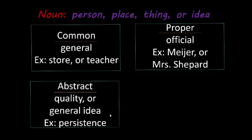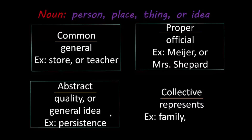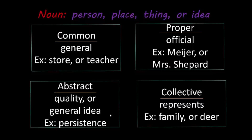The last noun we're going to discuss is the collective noun. It's a collection, meaning it represents a group of persons, animals, or things. Some examples would be family or deer. Family represents parents, siblings, aunts, uncles — a group of people. Deer represents a group of animals such as does, fawns, and bucks. So they're collective.